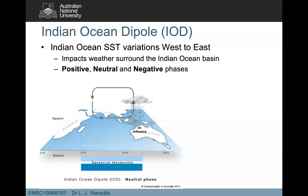So from one ocean to another. The next index we're going to talk about is the Indian Ocean Dipole. It looks at sea surface temperature variations west to east across the Indian Ocean. It impacts weather around the Indian Ocean Basin and comes in three phases: positive, neutral and negative.